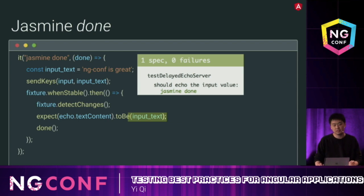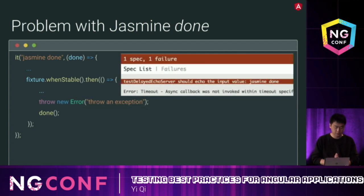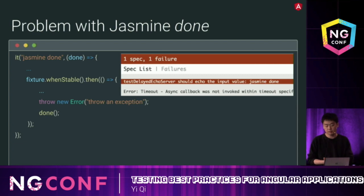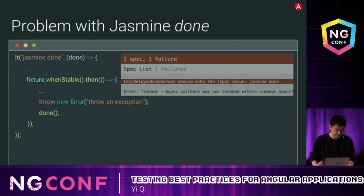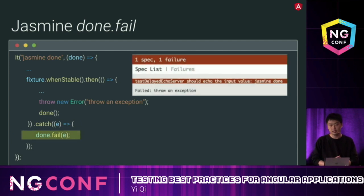But is there a problem with this? What if our test somehow throws an error? The test can still fail — but the error message just says timeout. It somewhat makes sense because our done call won't have a chance to complete, but it's not the error message we want. To handle this, we need to catch the exception and pass the error message to done.fail. Then it shows the right error message.